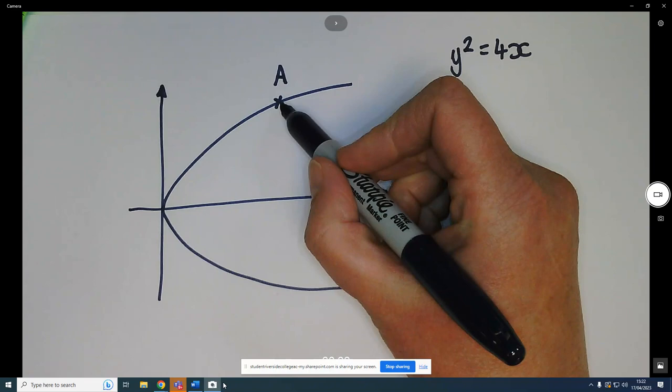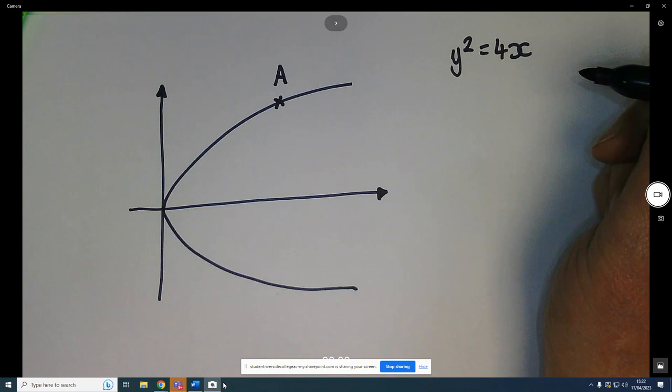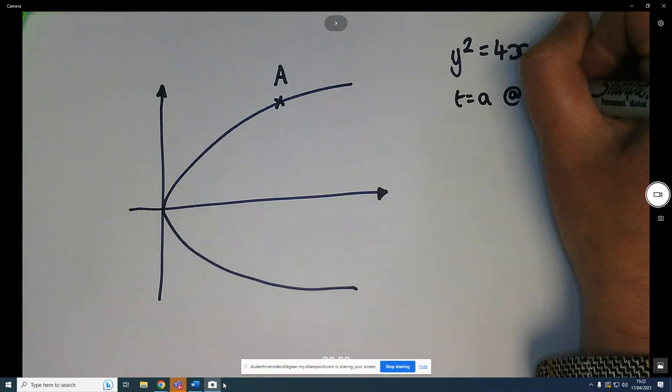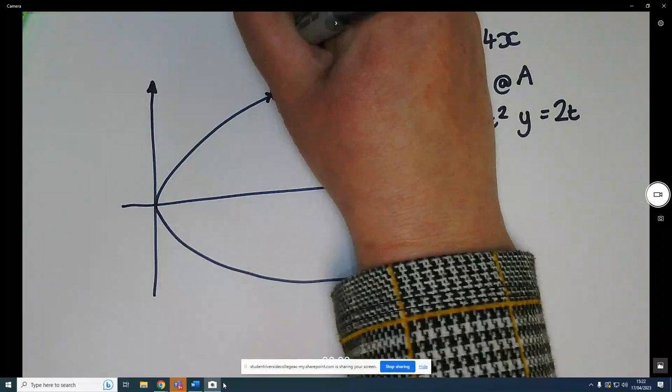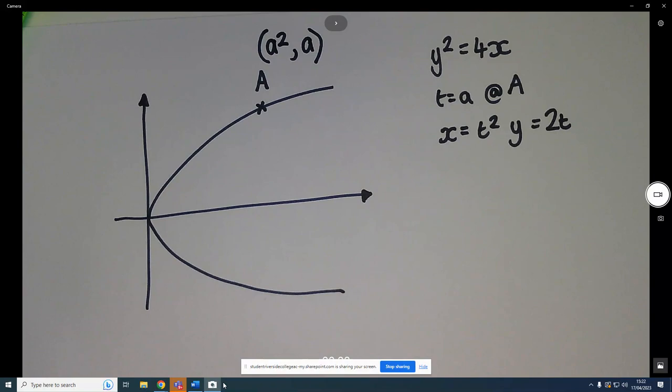Right, so this point A here that is at the point... The point A lies on the curve where t is equal to a. Therefore, if we go back to our original equations that x was equal to t squared and y is equal to 2t, if we pop a into both of those, you get the coordinates of A is a squared, 2a.